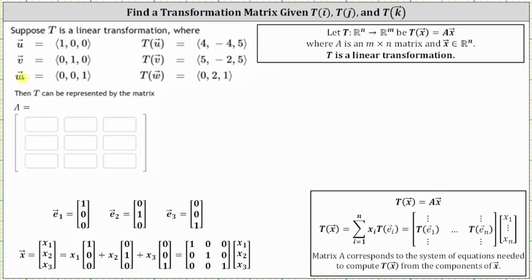Vector u is really the vector e sub one, which is the vector (1, 0, 0). Vector v is really the vector e sub two, which is the vector (0, 1, 0). And vector w is the vector referred to as e sub three, which is the vector (0, 0, 1).